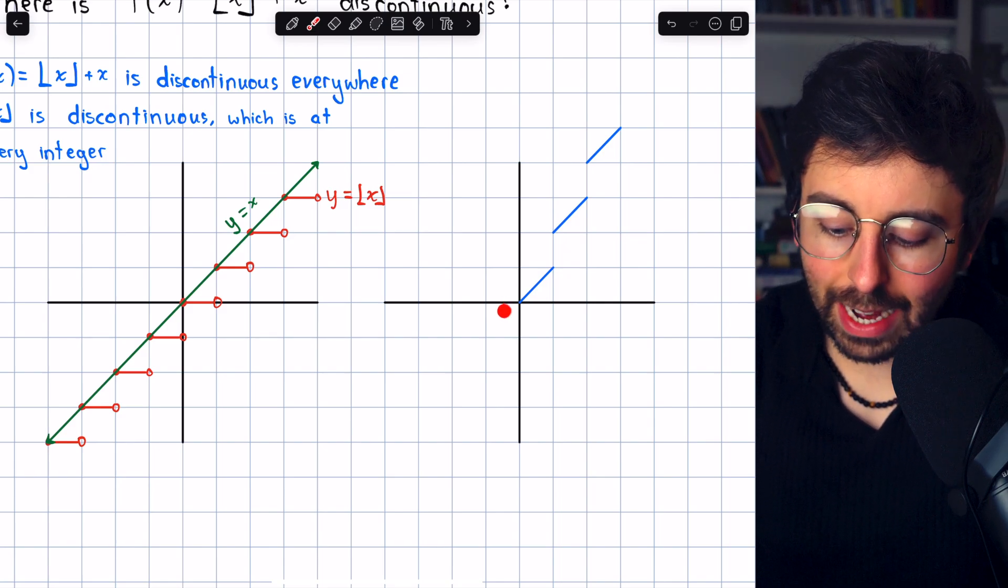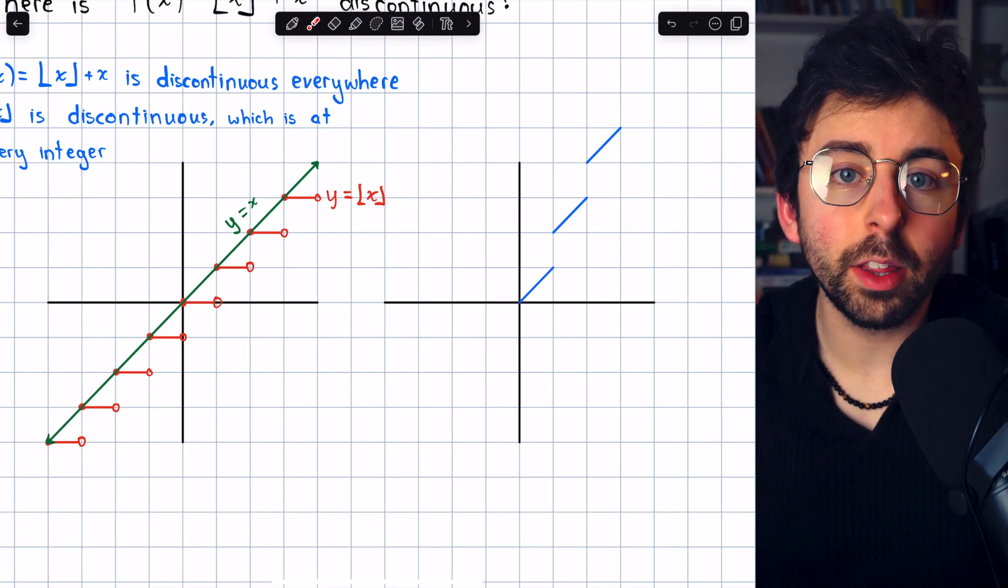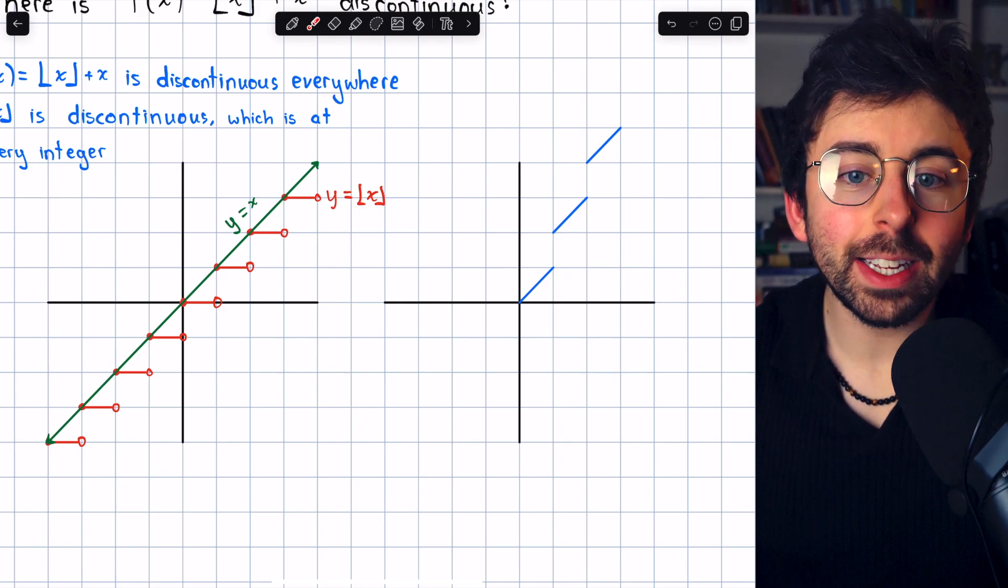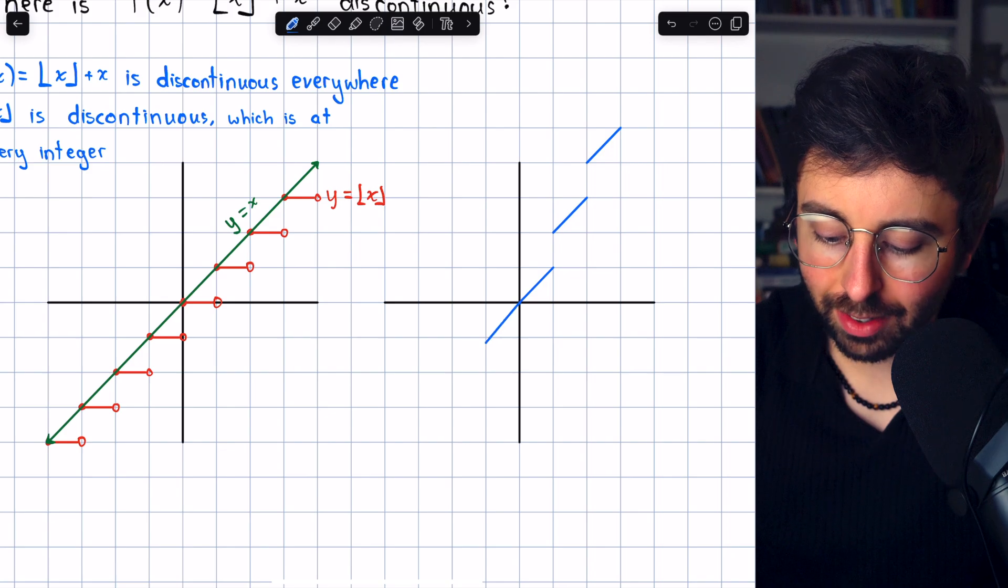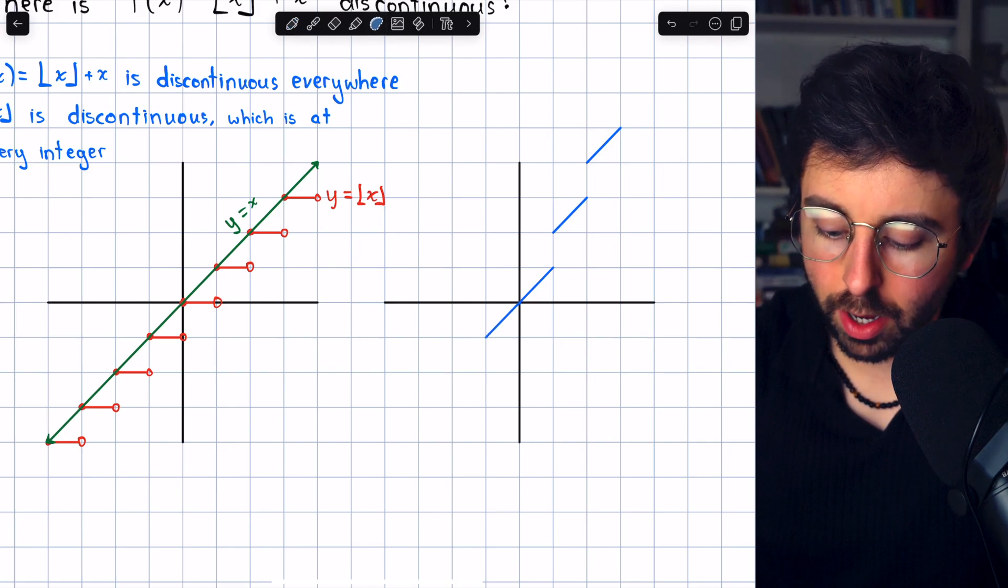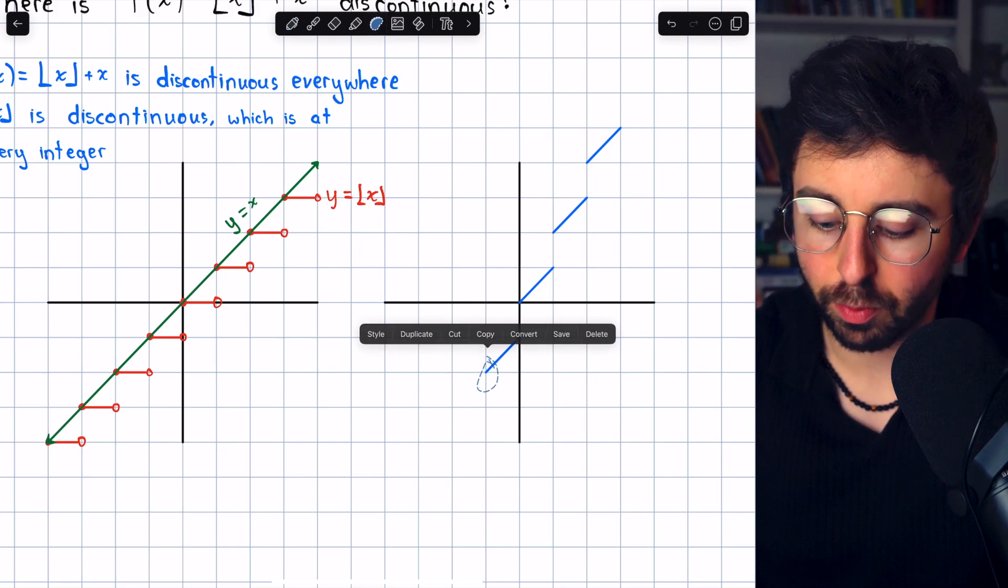This pattern continues in the negative direction. If we plug negative 0.5 into the floor function, it rounds it down to negative 1. So our line, y equals x, will get shifted down 1 because of the addition of the floor function.